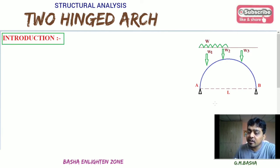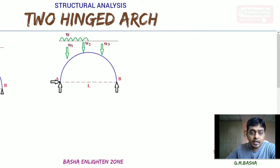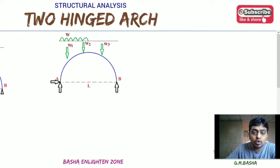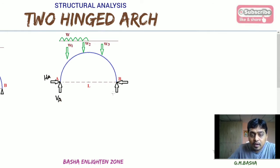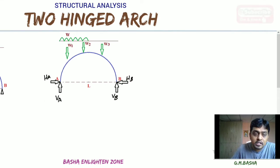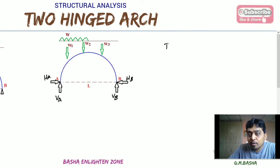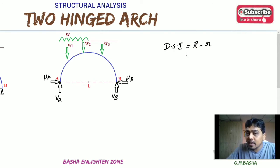This type of two-hinged arch has a degree of indeterminacy of one. Due to the supports at A and B, there will be four reaction components: horizontal reaction at A, vertical reaction at A, vertical reaction at B, and horizontal reaction at B. At each hinged support there are two reactions, giving four reaction components total. So how many reactions? There will be 4 reactions.